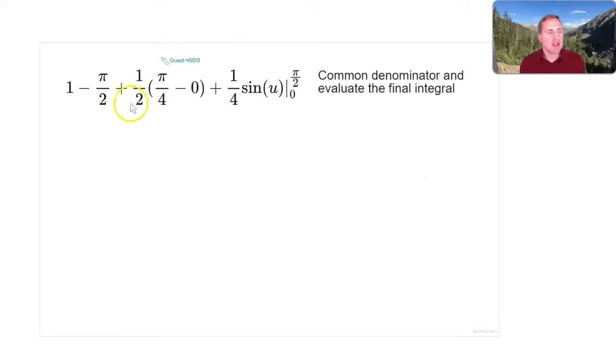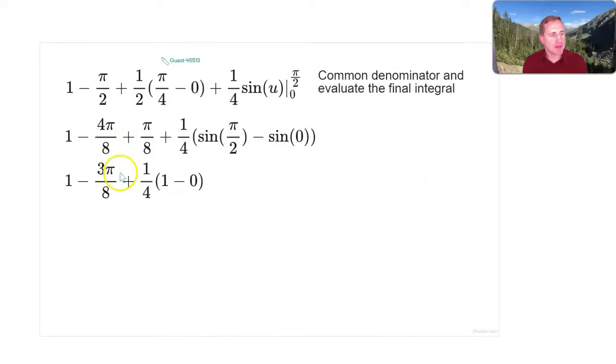So evaluate this with a common denominator for this final integral, especially with these front terms. So we end up with 1 - π/2 can become (2 - 4π)/8, because 1/2 times π/4 is π/8. So that way we can combine these in just a moment. Let's keep the 1/4 out front here, the sin(π/2) - the sin(0) from the fundamental theorem of calculus. So 4π/8 - π/8 is 3π/8. We still have the 1 out front. Then it's plus 1/4 times sin(π/2) is 1, sin(0) is 0.